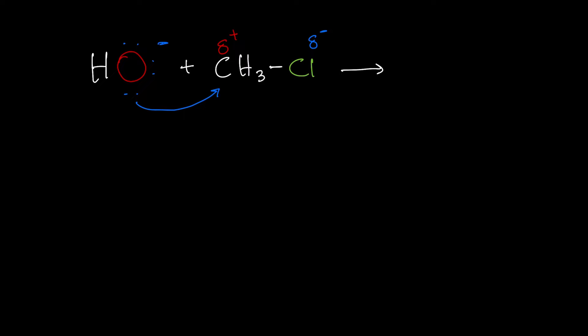When the negative oxygen approaches the carbon, it's going to repel the chlorine, which has a partial negative charge. The chlorine is going to take the electrons in the bond with it because it's more electronegative than carbon and can pull on those electrons stronger. So what you end up getting is the CH3 bonding to the hydroxide — technically bonding to the oxygen — and then you also have the chloride ion floating around.